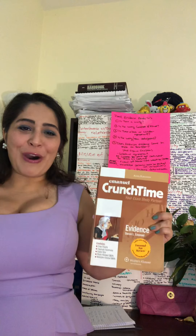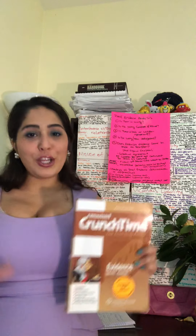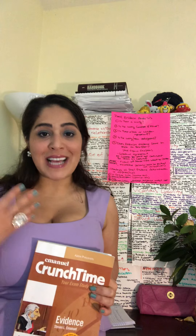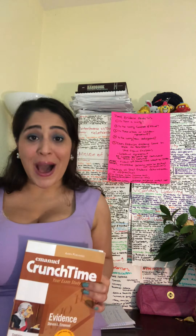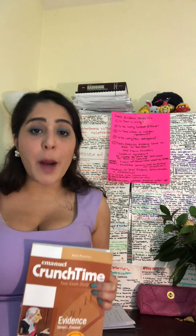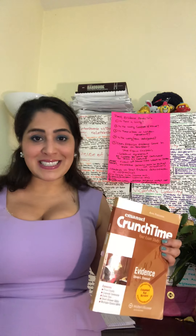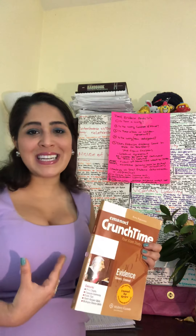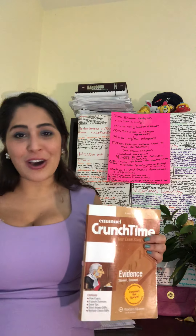Hi guys, this is Asal. I'm studying for the bar and I wanted to review my notes with you. Today I'm studying evidence, specifically opinions and expert testimony. It's actually very simple. All you need to know is that for a person to be able to testify, they must have personal knowledge of what they're testifying about — this means that a person must be competent to testify. But there are certain instances where a person wasn't necessarily at the scene and doesn't have personal knowledge, so that's where expert testimony comes in.